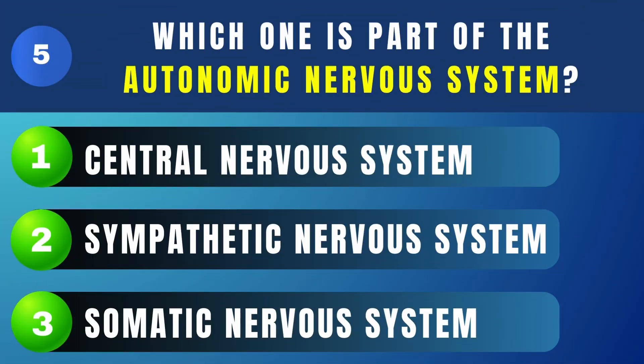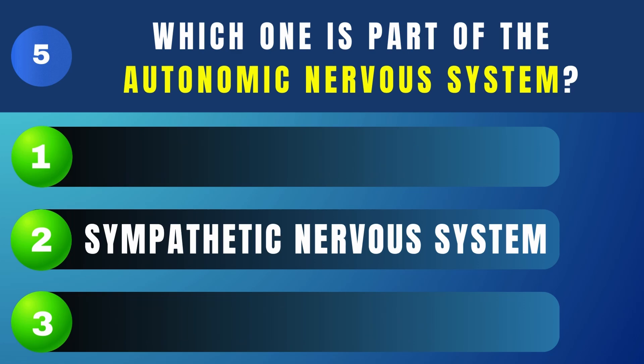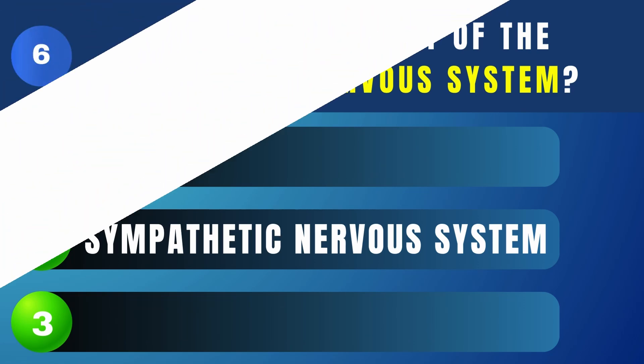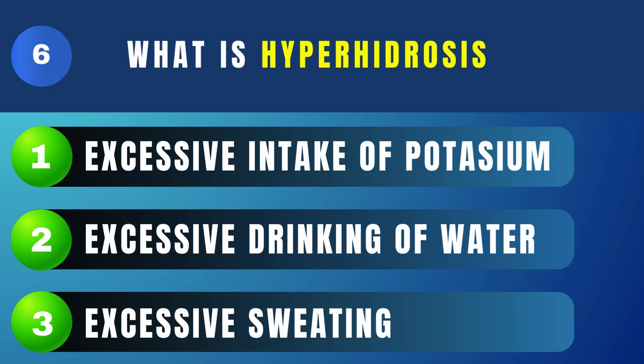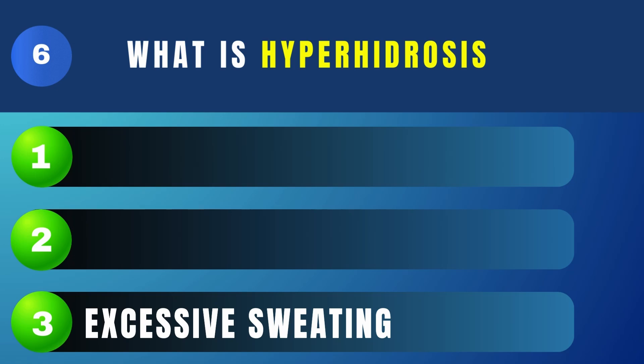Which one is part of the autonomic nervous system? Sympathetic nervous system. What is hyperhidrosis? Excessive sweating.